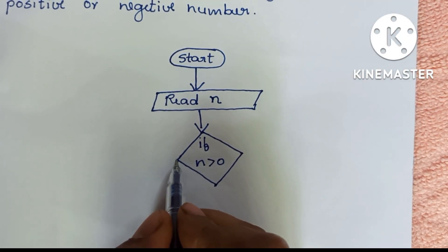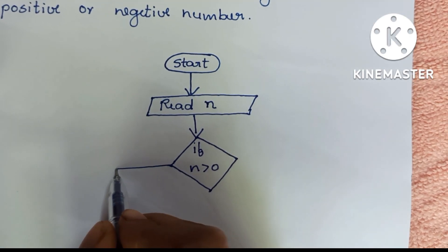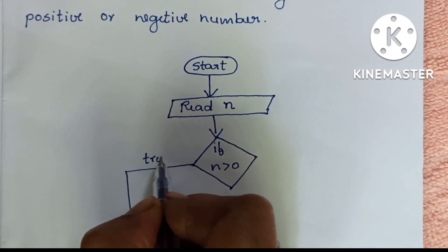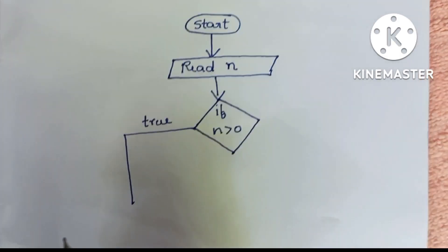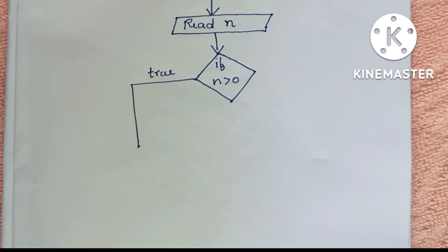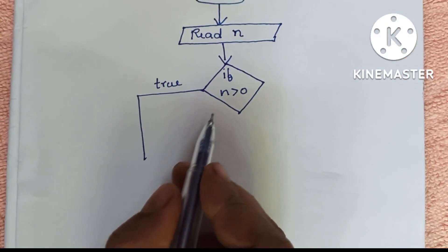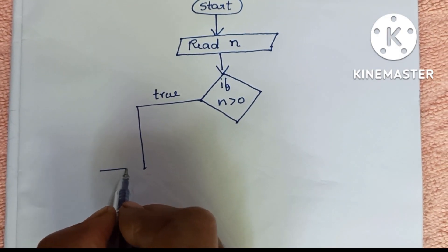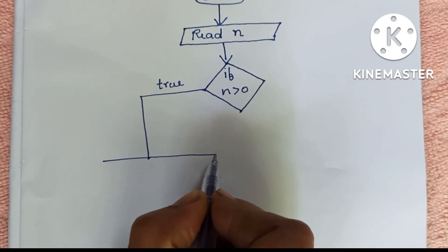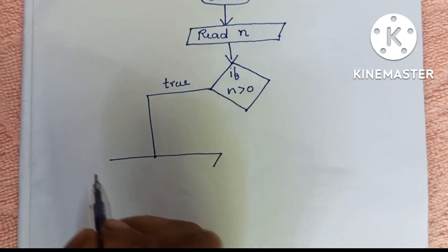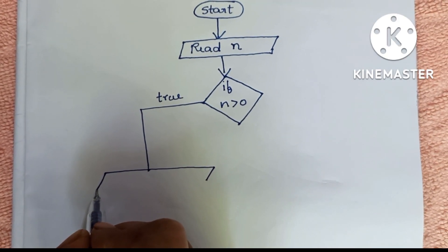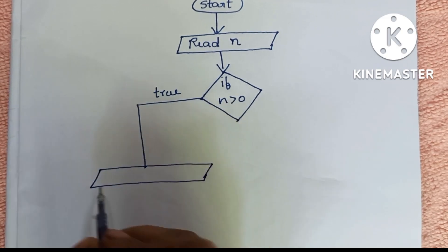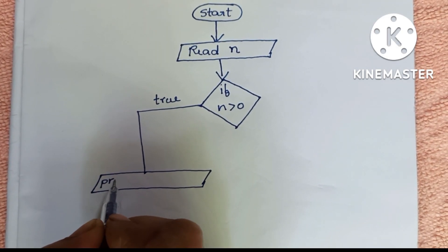If N is greater than zero, this condition is true, and it will display the output: the number is a positive number. Output is always declared within a parallelogram shape, so we have to draw a parallelogram and print: positive number.